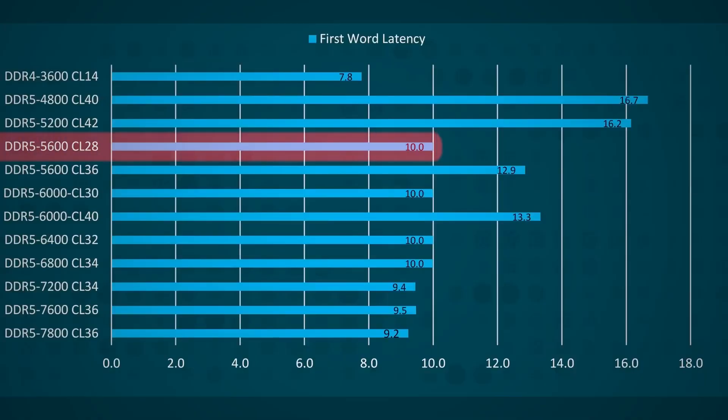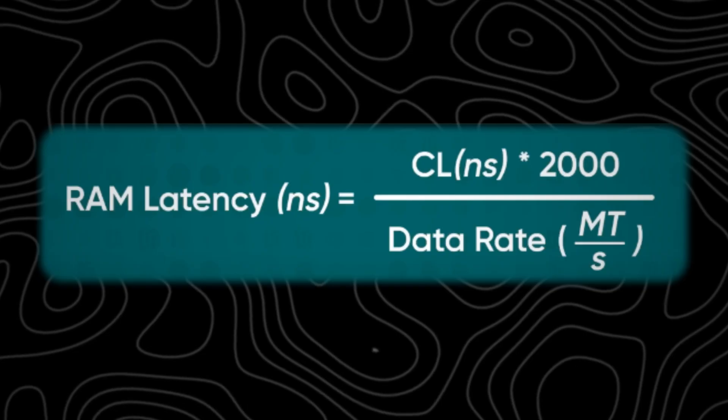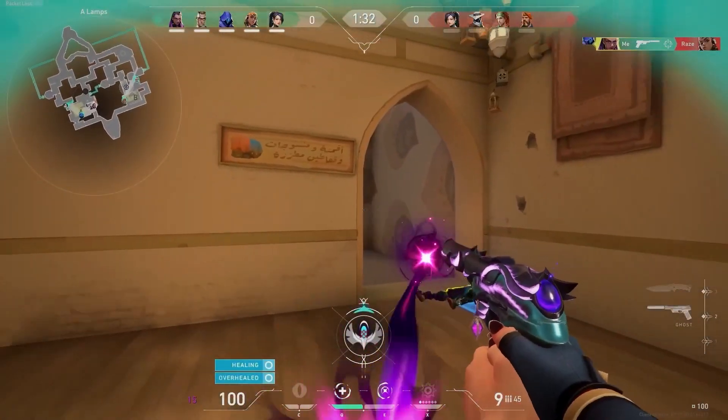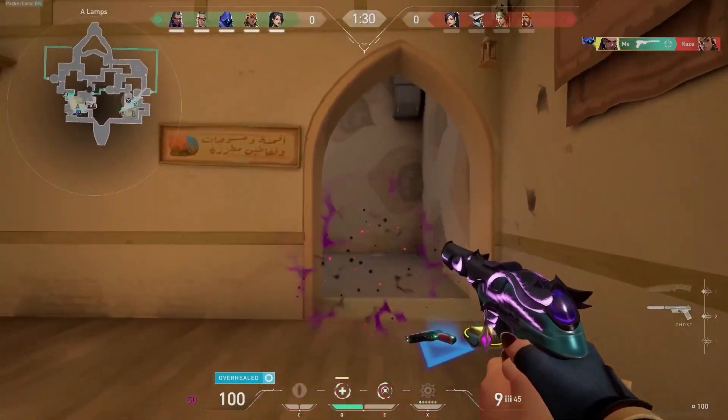Even if you have a higher clock speed, if the latency is also high, you'll end up with worse performance. For example, a 3200 MHz RAM with CL16 latency will be faster than a 3600 MHz RAM with CL18. Similarly in DDR5, a 5600 MHz with CL28 will be faster than 6000 MHz with CL40. So both clock speed and latency are interdependent and equally important. What you should look for is higher clock speeds and lower latency within your budget. For esports players where response time is critical, going for lower latency RAM is your best bet.